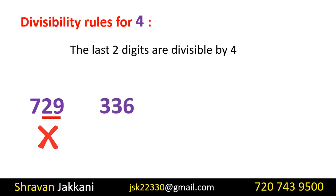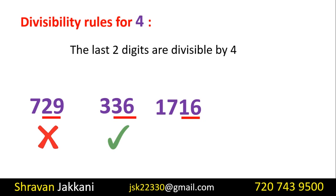Consider the number 336. The last two digits are 36. Since 36 is divisible by 4 (4 × 9 = 36), we can say that 336 is divisible by 4.